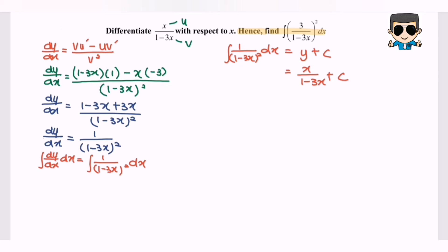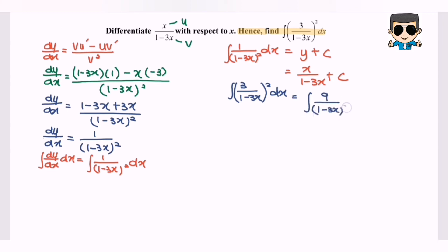So based on this situation, kindly refer to the question. We need to factor out the 9, and we will have 9 multiplied by the bracket of the integral of 1 over 1 minus 3x to the power of 2, with respect to x.